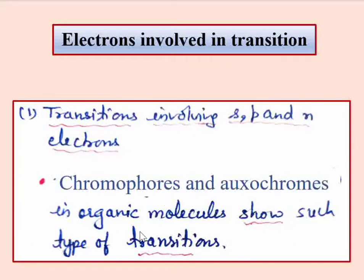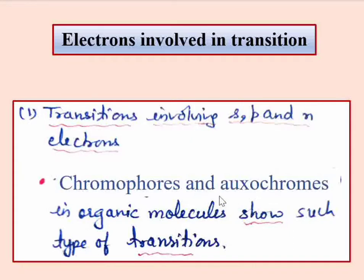The first type of transition involves S, P, and N electrons, and these are generally organic molecules. These molecules are generally double-bonded. Chromophores are functional groups, and the group of electrons can be double-bonded. Organic molecules absorb UV-visible radiation, and these molecules show these transitions.